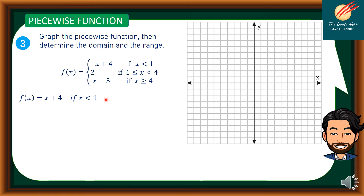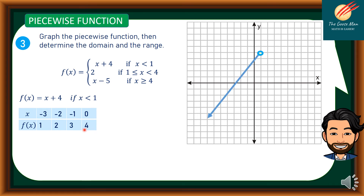Using the table of values for x + 4 where x < 1: if x = -3, f(x) = 1; x = -2 gives 2; x = -1 gives 3; x = 0 gives 4. The graph of this piece moves upward, excluding the point at x = 1 (which would give f(1) = 5) shown as a hollow point.